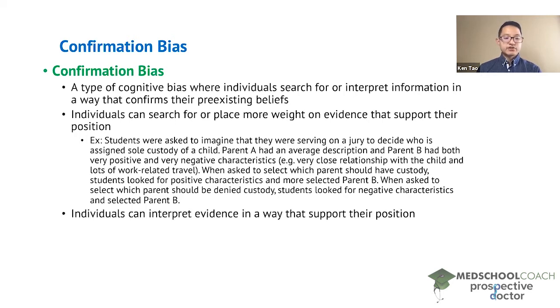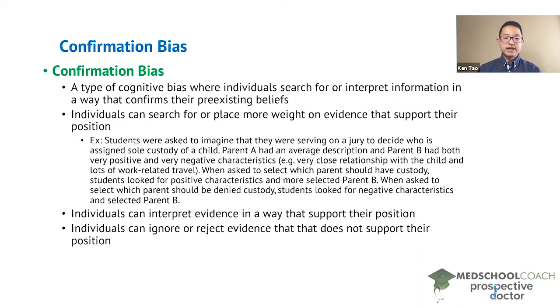Other ways that confirmation bias can occur include individuals interpreting evidence in a way that supports their position, as well as individuals ignoring or rejecting evidence that does not support their position.